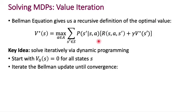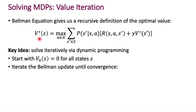This definition involves V star of s on both sides of the equation, so it's a recursive definition — related to dynamic programming. The idea is to iteratively update your estimate of V star of s by setting the new value to the right-hand side, where the right-hand side depends on the current value of V star of s. So you've effectively converted the Bellman equation into an update rule.